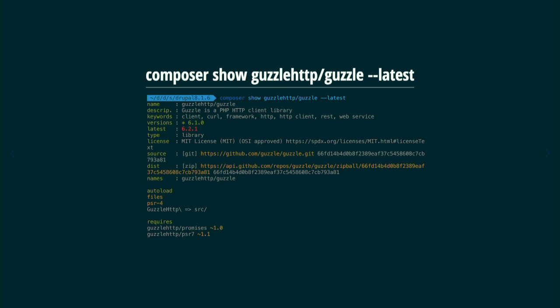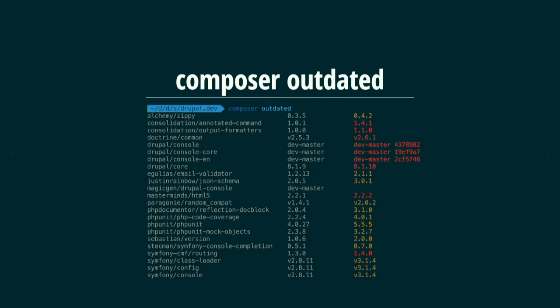If you want to see a specific package definition, run `composer show` with the package name as an argument. If you pass `--latest`, you will see the current version and the latest available version so you can run `composer update` for that package. To see outdated packages, run `composer outdated`.